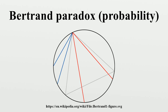The random midpoint method: choose a point anywhere within the circle and construct a chord with the chosen point as its midpoint. The chord is longer than a side of the triangle if the chosen point falls within a concentric circle of radius one half the radius of the larger circle. The area of the smaller circle is one fourth the area of the larger circle, so the probability is one quarter.